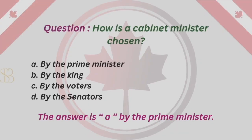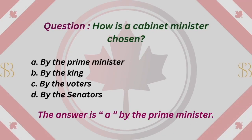Question: How is a cabinet minister chosen? A. By the Prime Minister. B. By the King. C. By the voters. D. By the senators. The answer is A. By the Prime Minister.